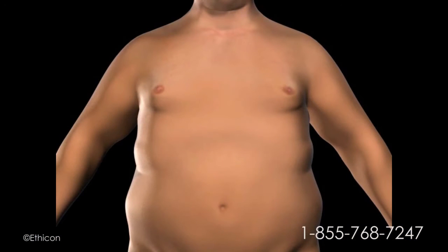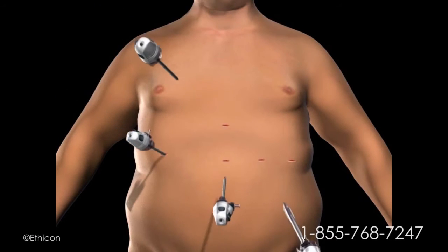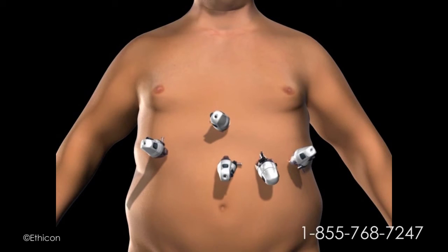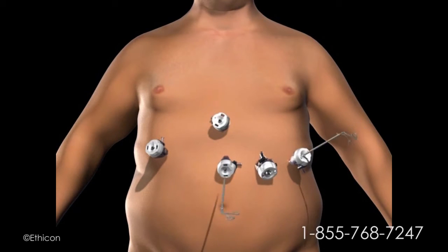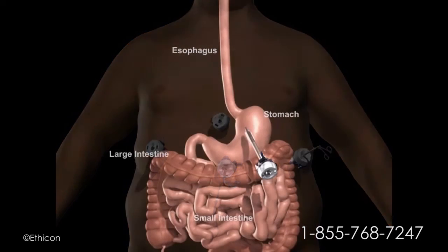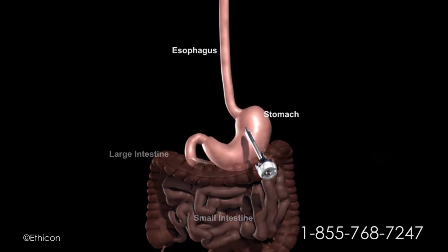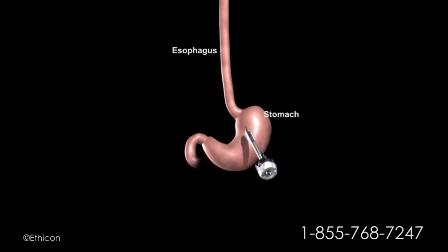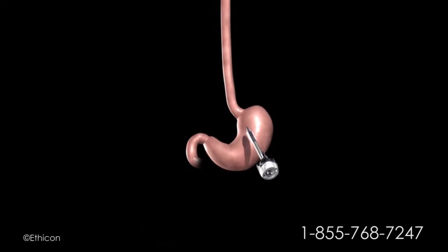To gain access to the abdominal cavity, small incisions are created on the abdomen. Trocars, which serve as passageways for the surgical instruments, are placed into the incisions. The surgical instruments are passed through the trocars to access the abdominal cavity. The surgeon examines the abdominal cavity using a laparoscope or video camera.